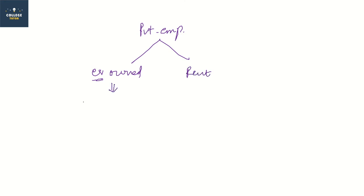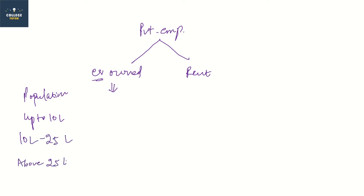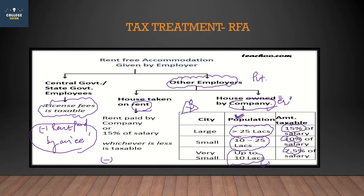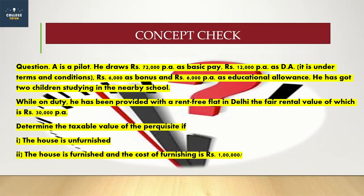If the employer owns the accommodation, we look at which city it is in. If the city population is up to 10 lakhs, then 7.5% of salary is taxable. If the population is 10 lakhs to 25 lakhs, then 10% of salary is taxable. If it is above 25 lakhs, then 15% of salary is taxable. But if the accommodation is rented by the employer or company, then actual rent paid or 15% of salary, whichever is less, is taxable.